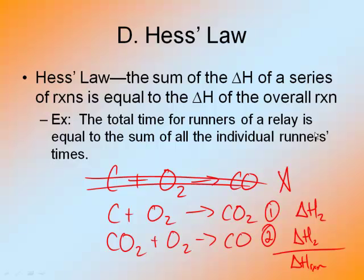If I sum up the delta H's, I will get the overall delta H for my reaction that produces carbon monoxide. A more real-life example is like runners in a relay race. Some runners can go slow, some runners can go fast, but it doesn't matter because the total time is based on the sum of all of the runners in the race.